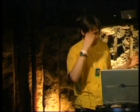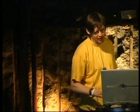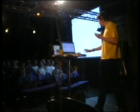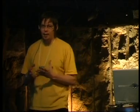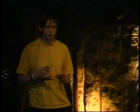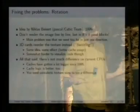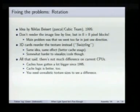That said, if you're just rot zooming small images, it's not much different on current CPUs, because caches have gotten a lot bigger since 1995. This technique was designed for Pentium 1, which had like eight kilobytes of cache. By now we have several cache levels — say, one megabyte of level three cache, 256 kilobytes of level two cache, and so on.